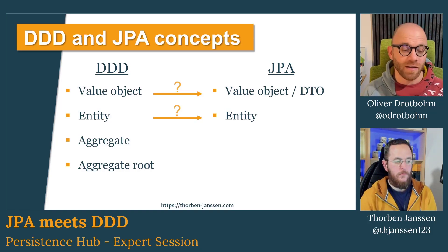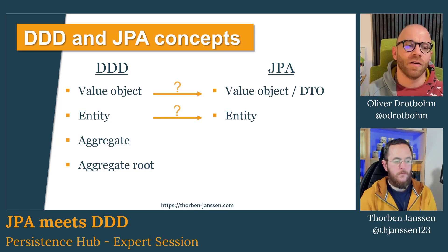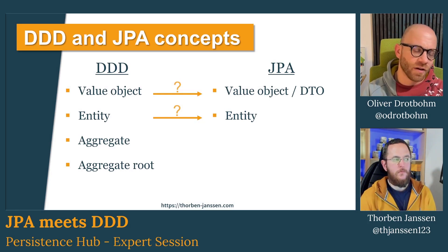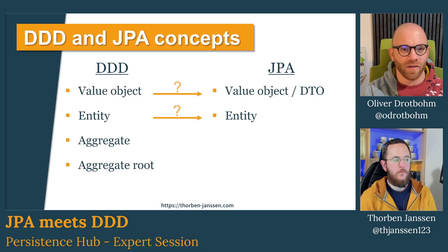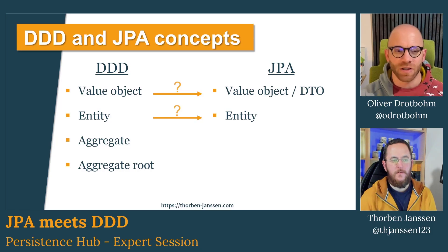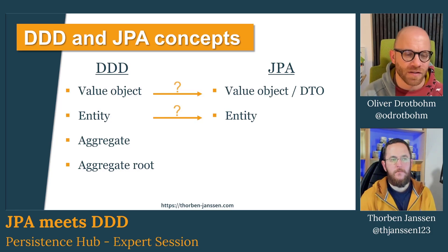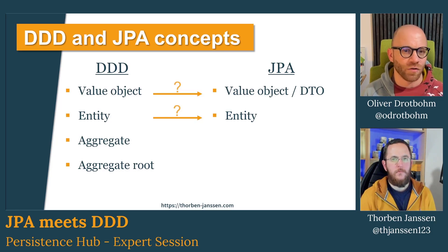The aggregates are a cluster of entities, and one of these entities becomes the aggregate root. It's the entry point into the entire arrangement. So for an order with its line items and potentially other related entities, the order class would be the aggregate root. Sometimes these terms are used interchangeably, but that's the idea — a cluster of entities with a single entry point into business operations on it.